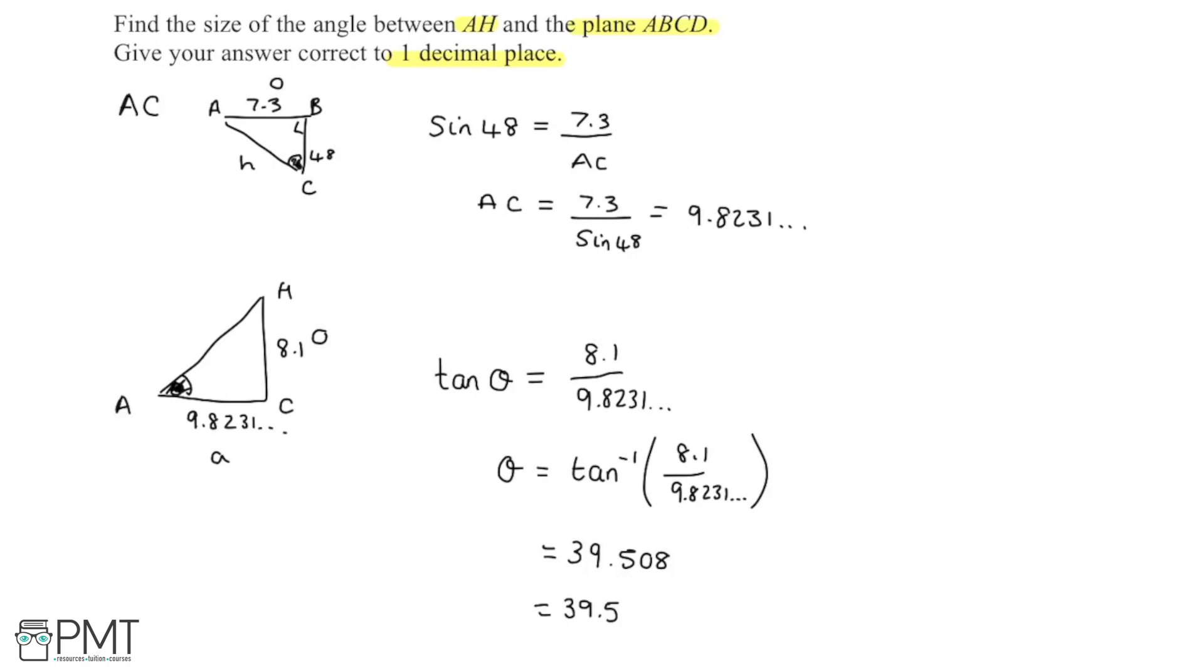Now, as for how each of the marks are awarded here, we would gain the first mark for starting a process to try and work out some of these sides or angles. So for this line of working here, that would gain us a mark. The second mark would be for a complete correct process to find the length AC, which we've done here in this second line. The next mark would be for using tan to find the angle that we're looking for, so for basically writing this line here, and then the final mark is going to be for this correct answer of 39.5 given to one decimal place using the inverse of tan here.